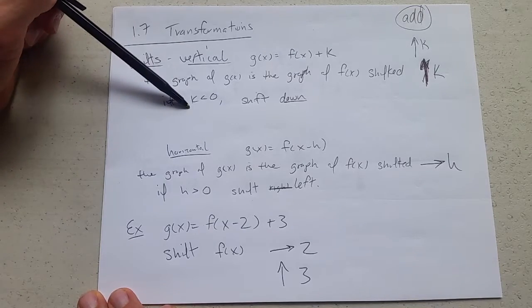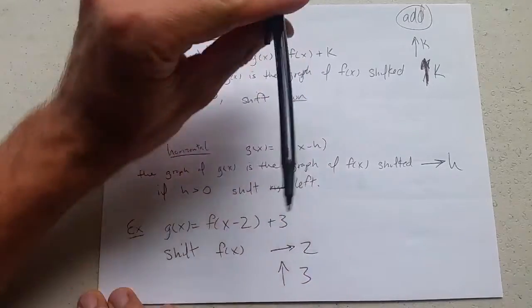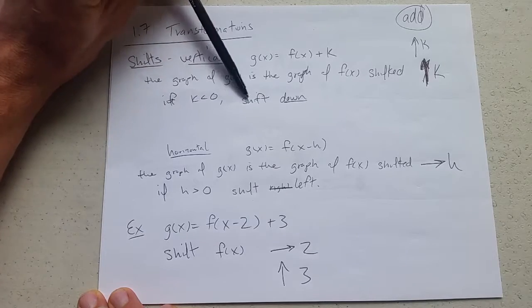What happens if k is negative? Well you could say shift up negative two units, or you could just say shift down two units. So if k is negative, less than zero, shift down.